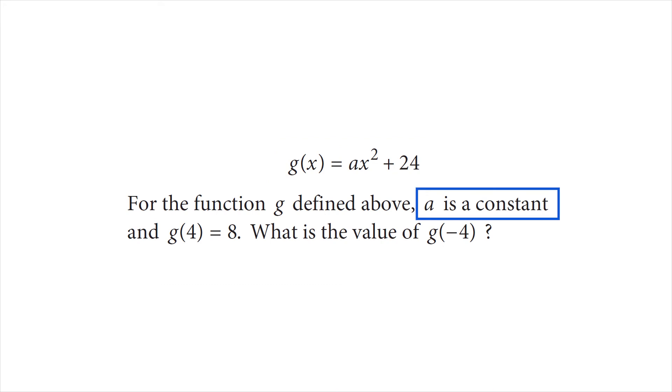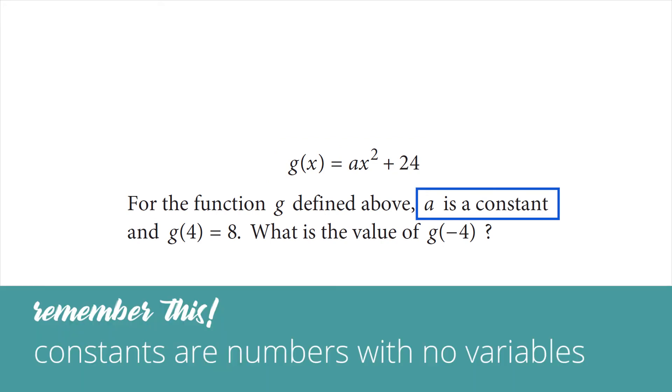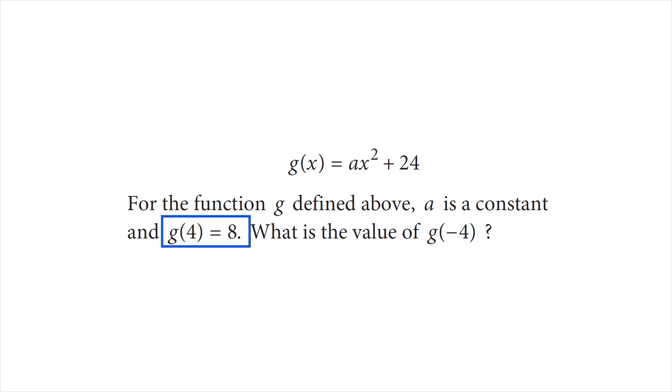Next they tell us that a is a constant. All that means is that a is just a number. And lastly, g(4) equals 8.